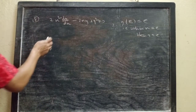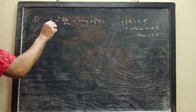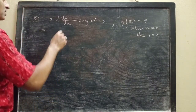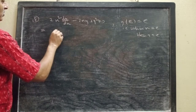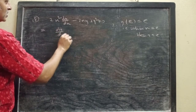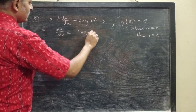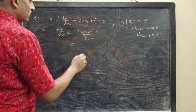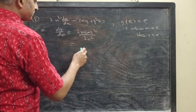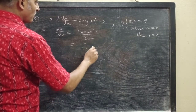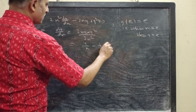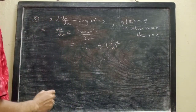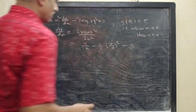So first, let us rewrite this equation in the form dy/dx equals f(x, y), that is in terms of x and y. We have dy/dx equals (2xy minus y²) divided by 2x², which we can write as y/x minus half of (y/x)². Let us take this as equation 1.